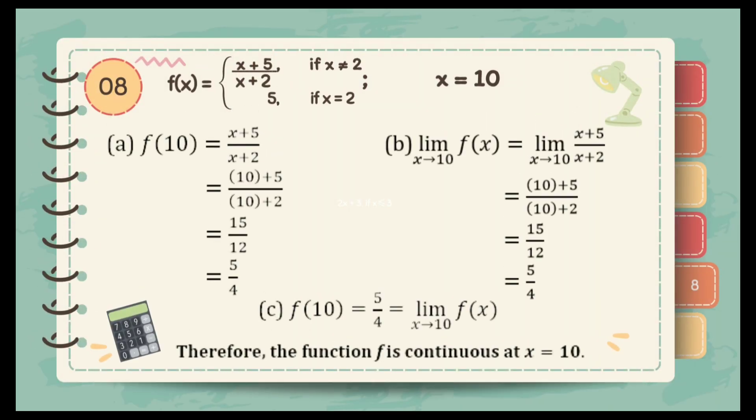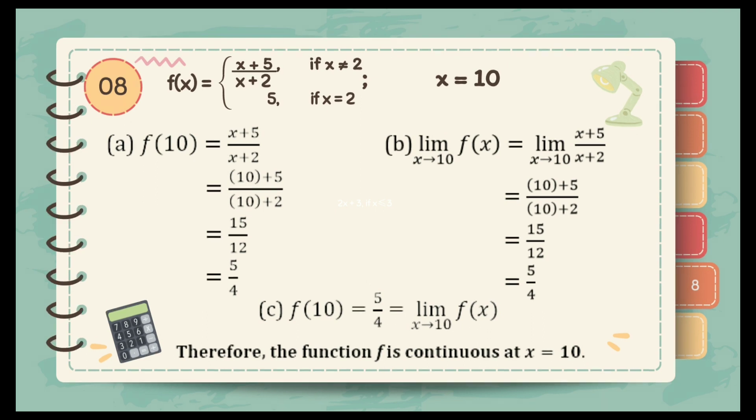For item 8, f of x is equal to x plus 5 over x plus 2 if x is not equal to 2, and 5 if x is equal to 2. The value of x is equal to 10. For letter A, we choose the function x plus 5 over x plus 2 since x is not equal to 2. Substituting 10: 10 plus 5 over 10 plus 2 is 15 over 12, which simplifies to 5 over 4. The limit of x plus 5 over x plus 2 as x approaches 10 also equals 5 over 4. For letter C, f of 10 equals the limit of the function. Therefore the function is continuous at x is equal to 10.